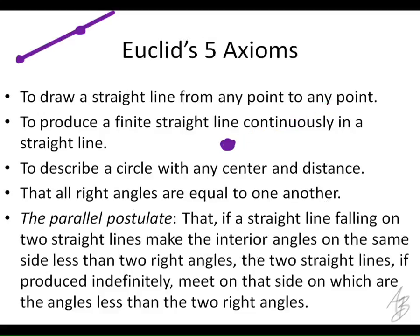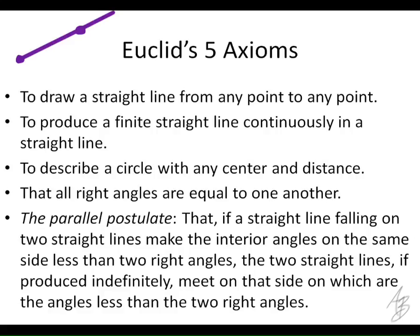The fourth axiom: that all right angles are equal to one another. Euclid defined right angles differently — they didn't measure in degrees; they defined right angles based on four right angles making a full circle. Basically, if you have a right angle here and a right angle there, you could take one and flip it on top of the other and they'd match up. The first four axioms are pretty simple.